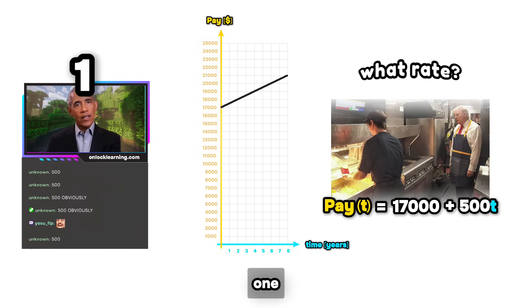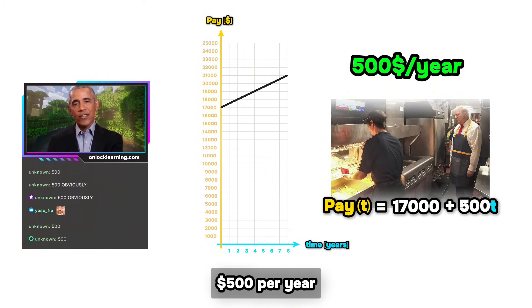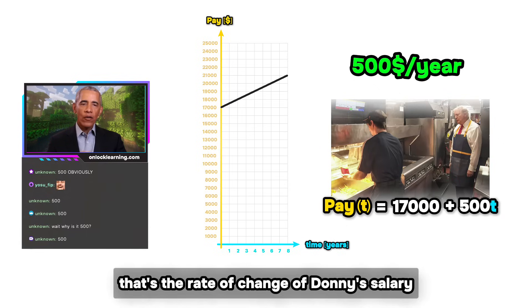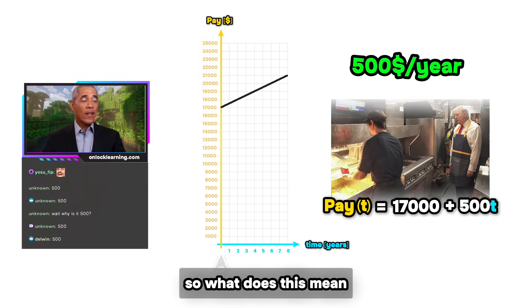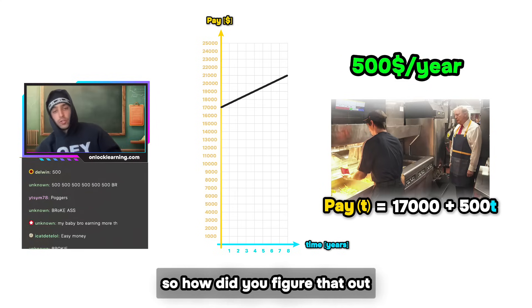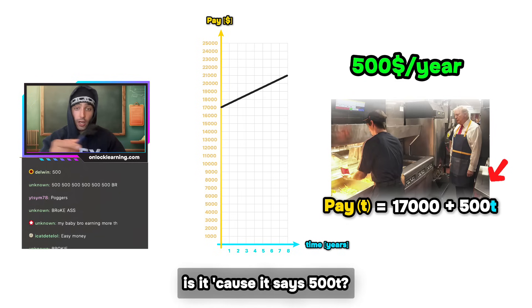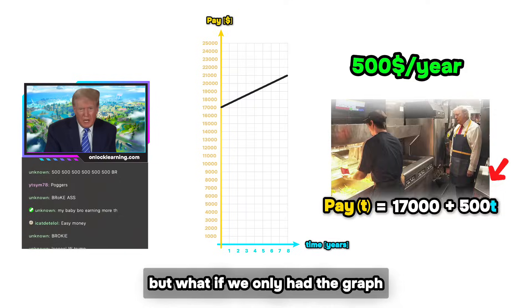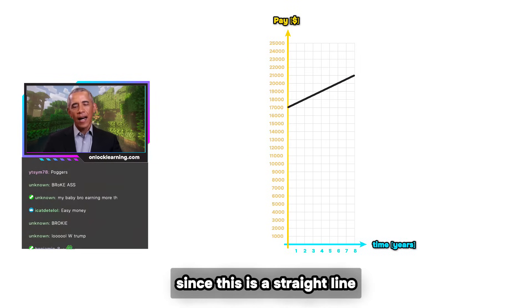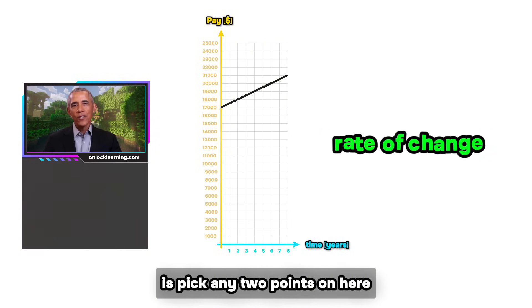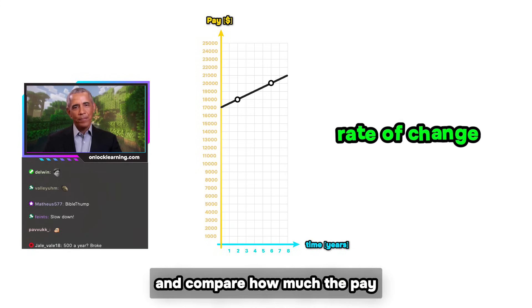Five hundred dollars per year. That's the rate of change of Donnie's salary with respect to time. So what does this mean? It means that each year Donnie gets a raise of five hundred dollars. Good for you Donnie. Appreciate it. So how did you figure that out? Is it because it says 500t? In this case yes, that works. But what if we only had the graph? Yeah, listen, since this is a straight line, to find the rate of change what you can do is pick any two points on here and compare how much the pay went up between them to how much time passed.